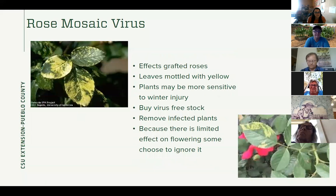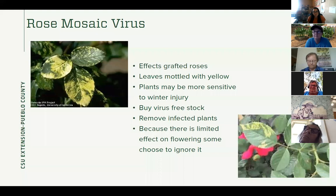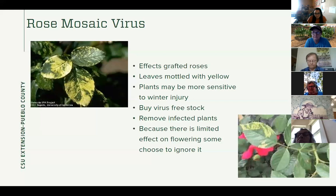Rose mosaic virus — this affects pretty much only grafted roses. If you have roses grown on their own rootstock, it's probably not going to be a problem. The leaves will be kind of mottled with yellow, but most of the time the flowers are unaffected. This is another one where — I think it looks kind of cool and the flowers aren't affected — so maybe just leave it. But if you hate it, there are some options: buy rootstock that's guaranteed virus-free and ask about it at the nursery. If you have infected plants, take them out. A lot of people choose to ignore this one because the effect on flowering is so limited, so you definitely don't need to do anything about it if you don't want to.